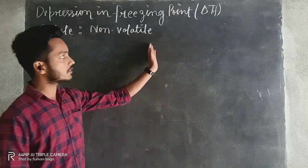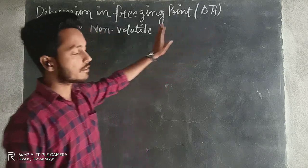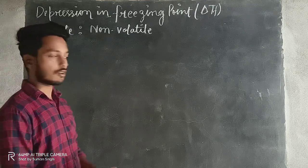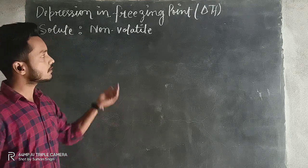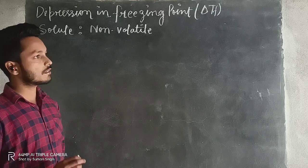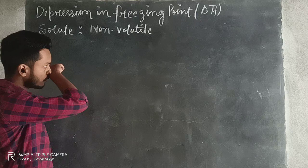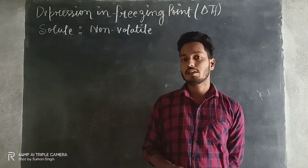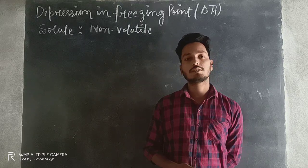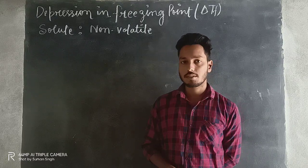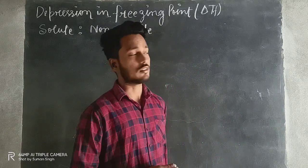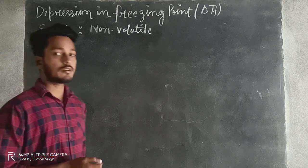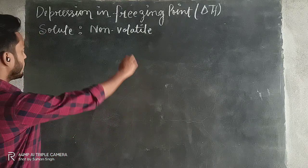We will see here depression in freezing point, which is denoted by delta TF. One thing to keep in mind is that the solute which we will use here should be non-volatile. Before starting this topic, I will give you one definition of freezing point. When we were in class 11, 9, or 10, we learned that the freezing point is the temperature at which the liquid starts to freeze. But here we will try to define the freezing point in terms of vapor pressure.